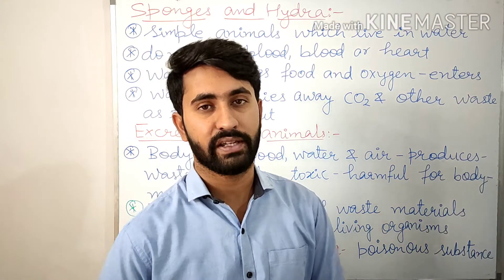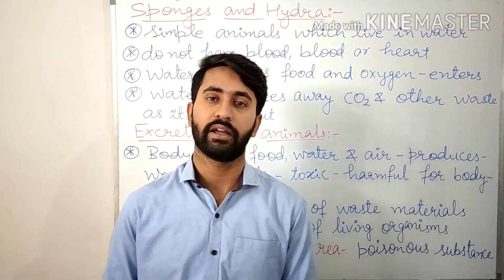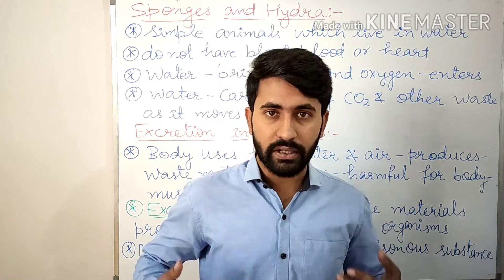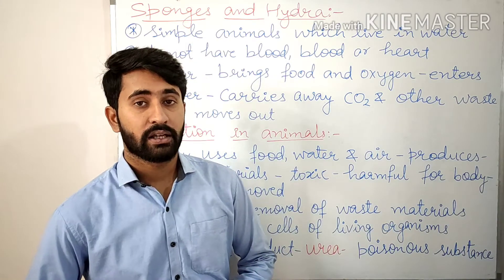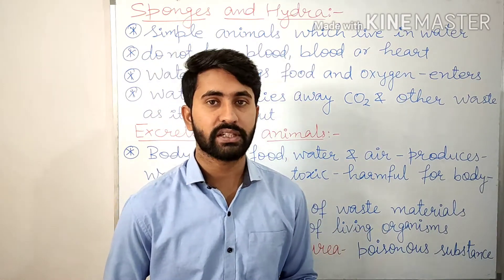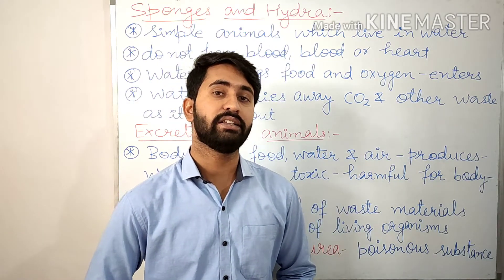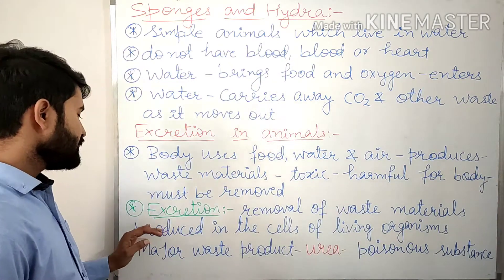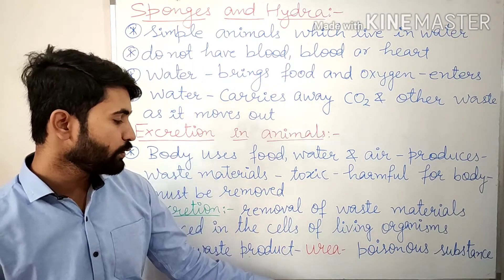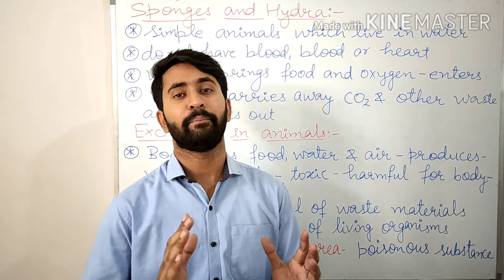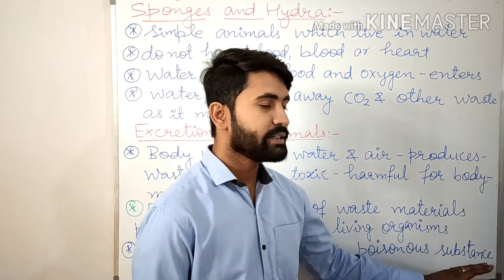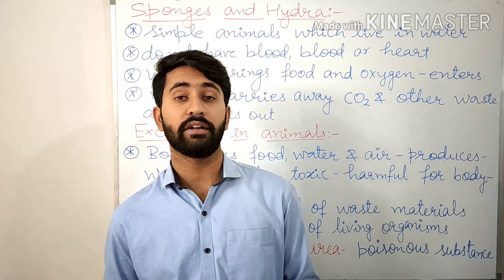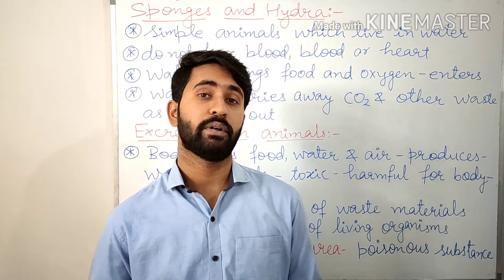The human body has various organs for the removal of waste. The carbon dioxide produced in our body cells during the process of respiration is removed from the body during exhalation by the lungs. The major waste product of our body is urea. This urea goes into our blood and makes it dirty. Urea is a poisonous substance so it must be removed from our body. If urea and other waste materials are not removed regularly from the body, then the person will soon die.